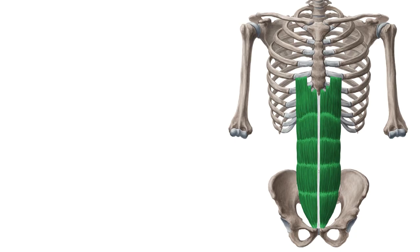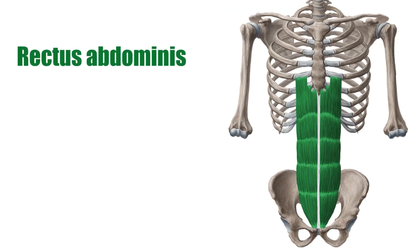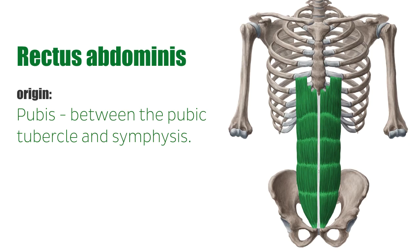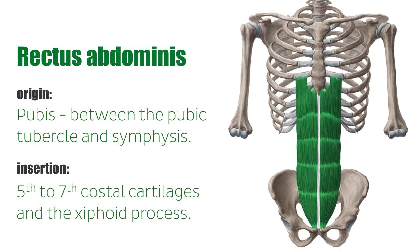As mentioned, the focus of this video is the rectus abdominis muscle. The rectus abdominis originates at the pubis between the pubic tubercle and symphysis, and inserts on the 5th to 7th costal cartilages and on the xiphoid process of the sternum. It passes through the rectus sheath, a tendinous muscle envelope built by the aponeurosis of the lateral abdominal muscles.